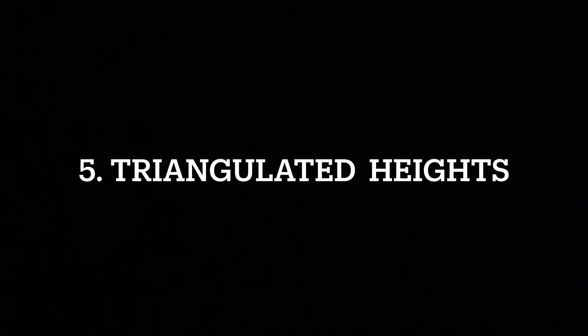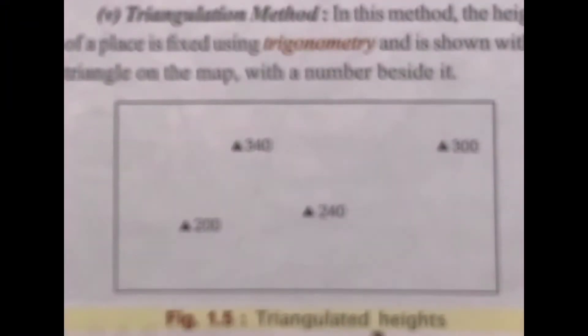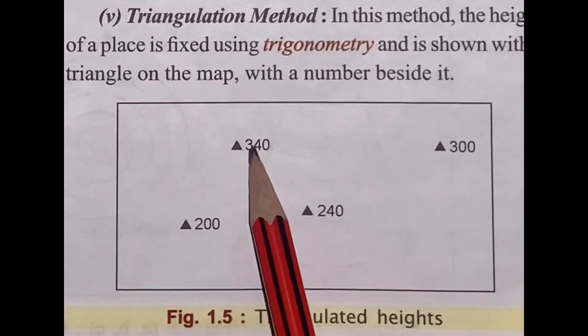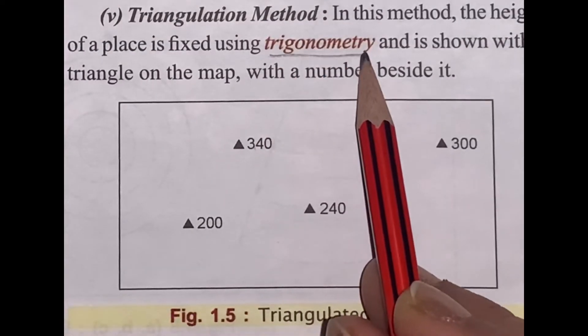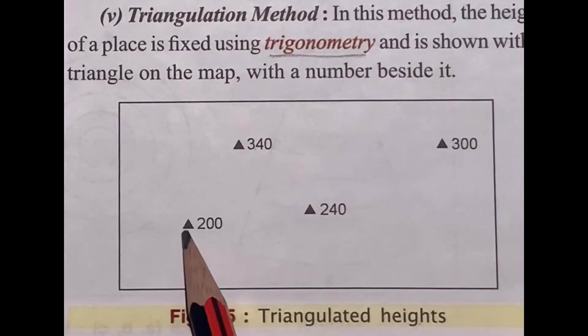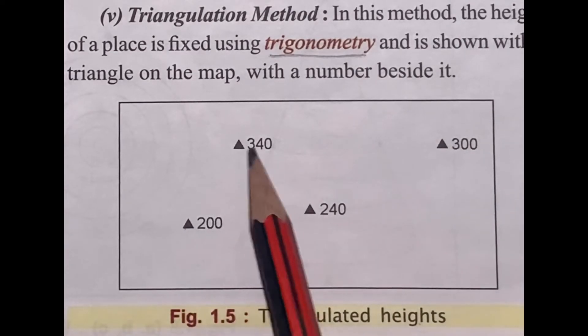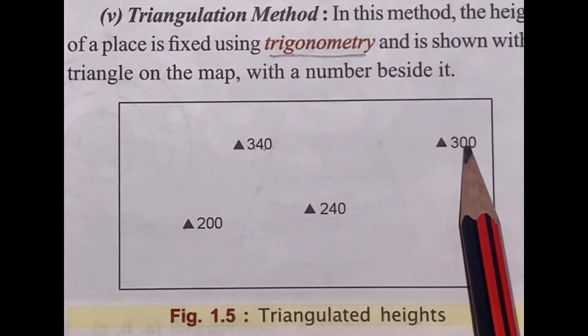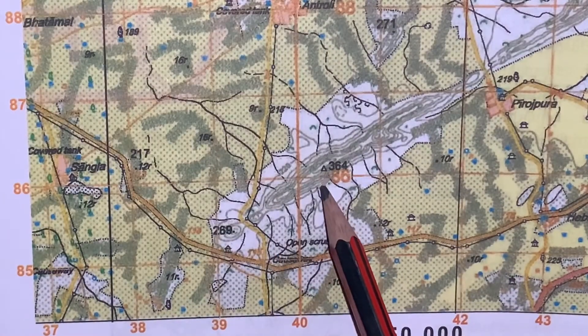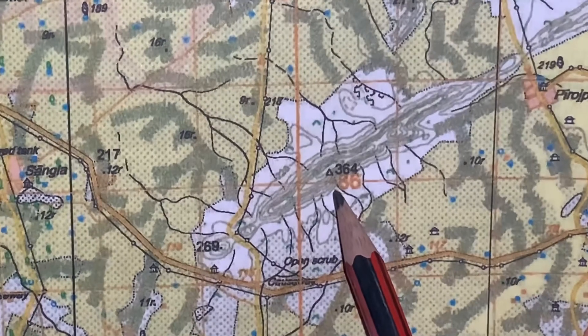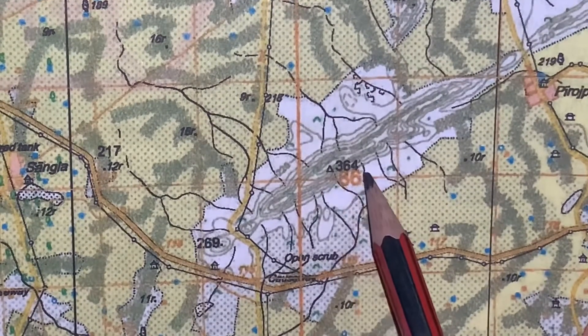Let's explore the fifth method — triangulated heights. In the triangulated method, the height of a place is fixed using trigonometry and is shown with a triangle on the map with a number beside it. For example, if the map shows triangle 364, it means the triangulated height of that place is 364.